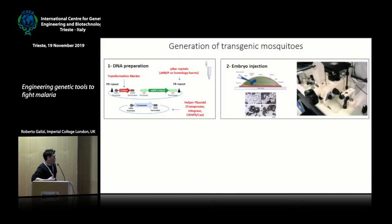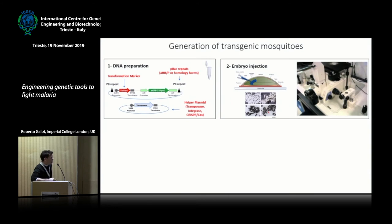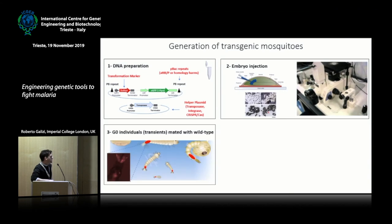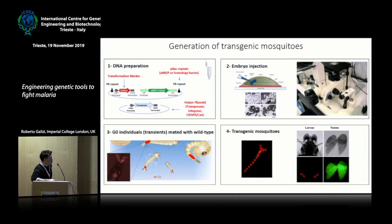The genetic trait follows Mendelian inheritance, so if you put a transgene in heterozygosis, you expect it to be inherited by 50% of the generation. To generate transgenic mosquitoes, we make our plasmids and co-inject them with a helper plasmid — these could be transposases, integrases, or CRISPR-Cas if you want to do a knock-in or knock-out. We do embryo microinjection, screen our G0s, and cross with wild type. If successful, you get your transgenic mosquitoes with a marker for easy identification and all the features added in your DNA.